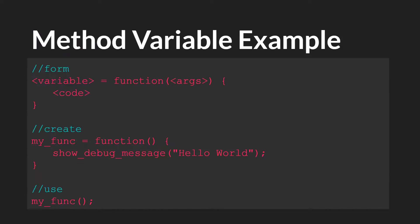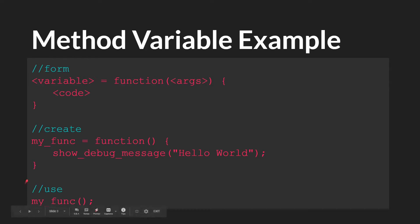We'll talk more about this in just a moment, but first let's talk about how method variables are created. The form of a method variable is the unnamed function assigned to a variable — the same unnamed function we talked about in the writing your own functions tutorial. We always had the form: function, then any arguments, then the code. This is one of the primary ways to use those unnamed or anonymous functions — you immediately assign them to a variable. An actual version might look like: my_function = function() { show_debug_message("hello world"); }. You use these functions exactly the same way you would script functions, with the variable name and then parentheses.